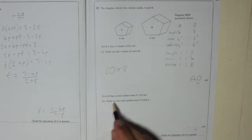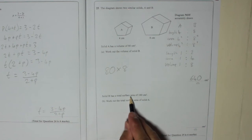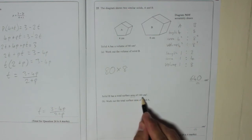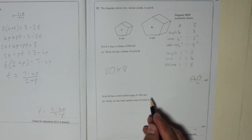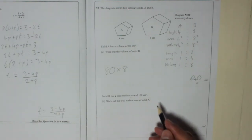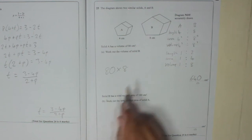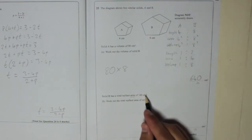Solid B has a total surface area of 160 centimetres squared. Work out the total surface area of solid A. So we're going backwards. B has got the area of 160.